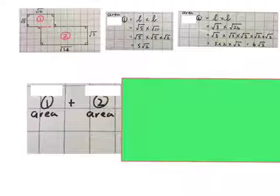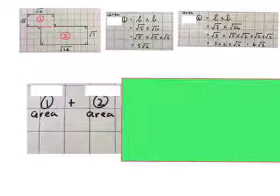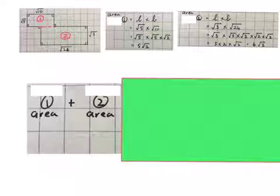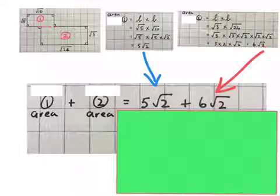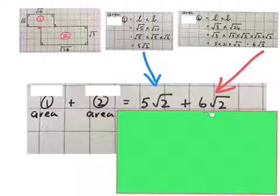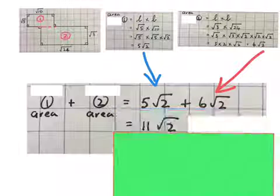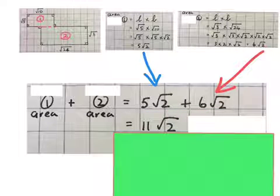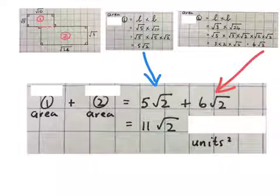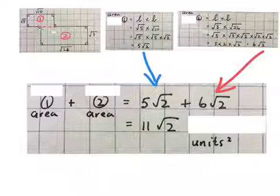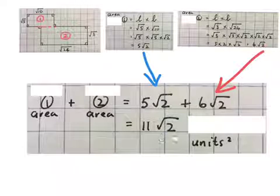Now to find the area of this whole shape we will add the area of 1 and the area of 2, which is 5 square root of 2 plus 6 square root of 2. That'll be 11 square root of 2 units square. The total area of this sketch with the two rectangles is 11 square root of 2 square units.